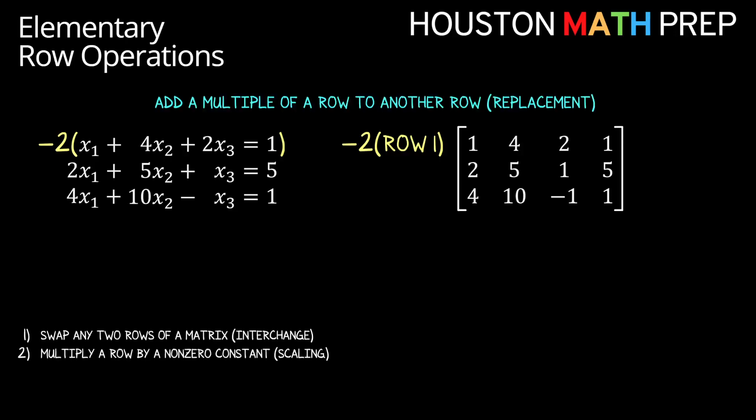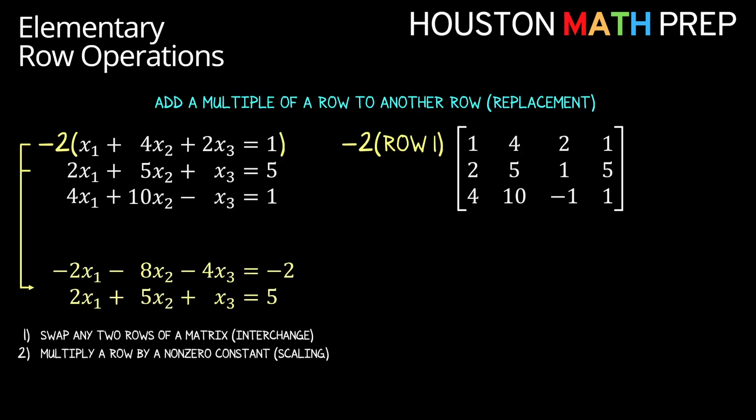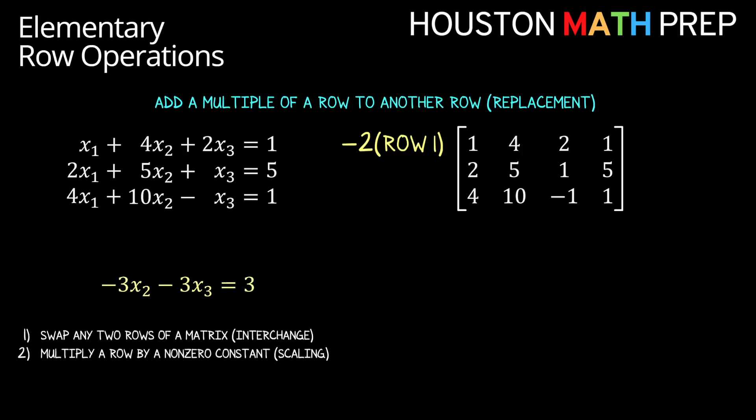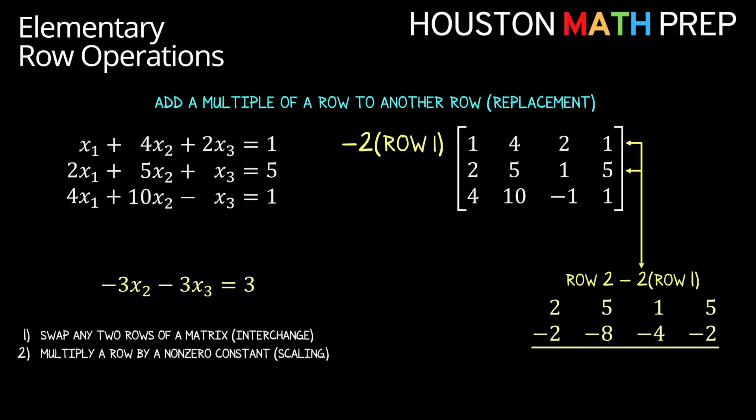If we think about how elimination with systems actually works, once we decided to multiply this top row by negative two we would then add those two equations together to eliminate the x1 term and be left with an equation containing fewer variables. In our augmented matrix this becomes the idea of adding a multiple of a row to another row. The same scaling by negative two happens to the first row and then we add it together with the second row.